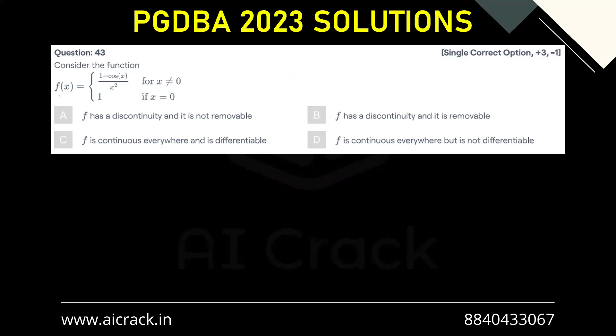Let's solve question number 43. Consider the function f(x) equals (1 - cos x)/x² for x ≠ 0 and 1 for x = 0, and we have to choose one of these options.